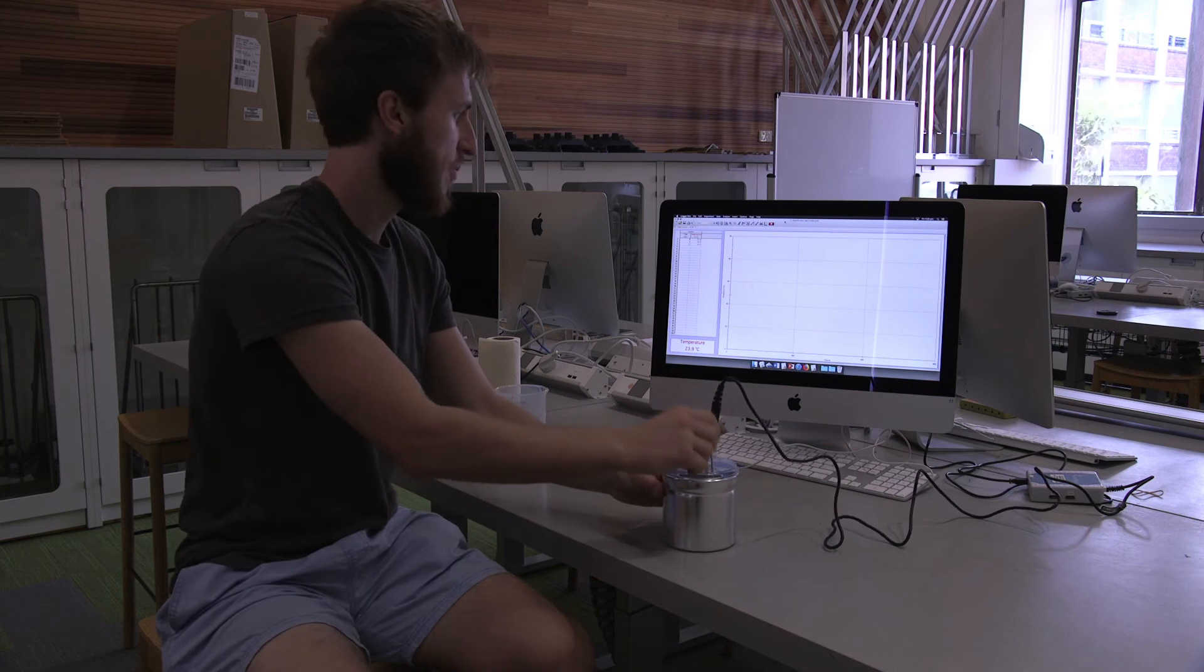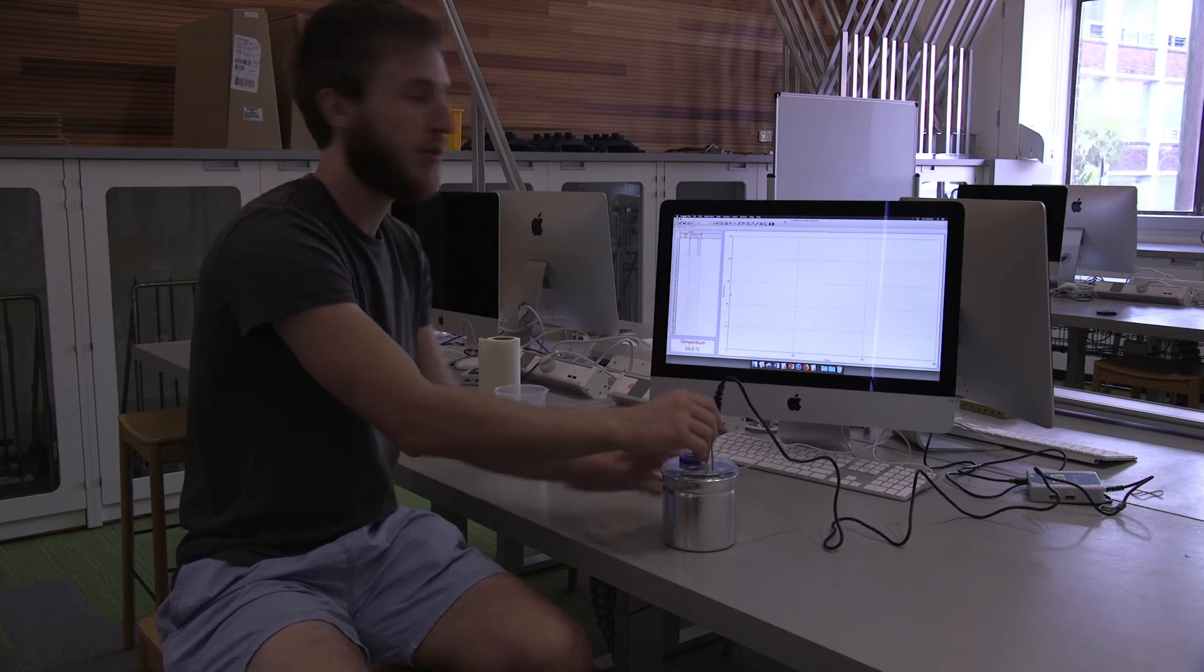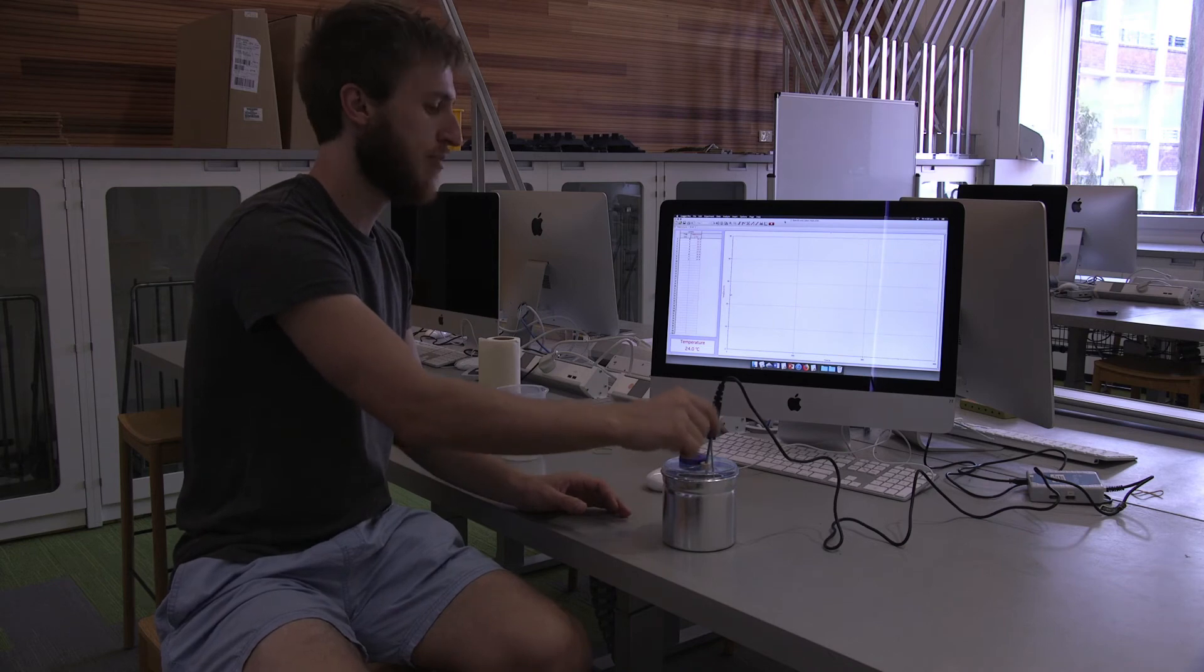Okay, so you want to stir a bit and make sure that your line's flat because you want to be at equilibrium before you add your ice. So this is important. So just stir for a bit until it reaches it.